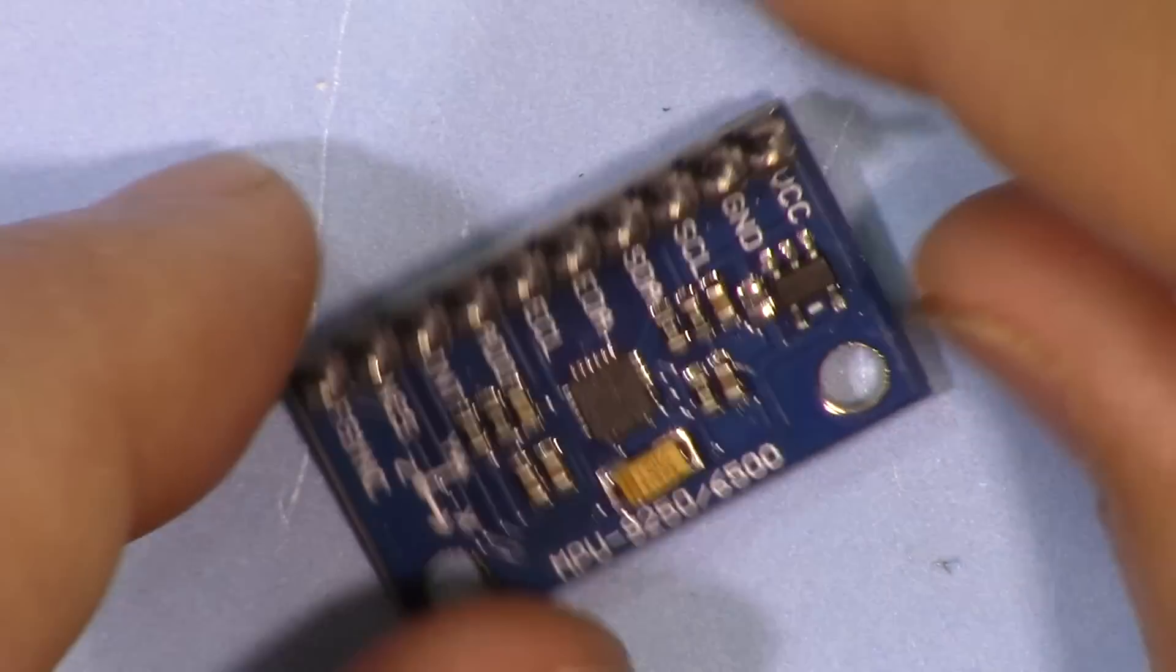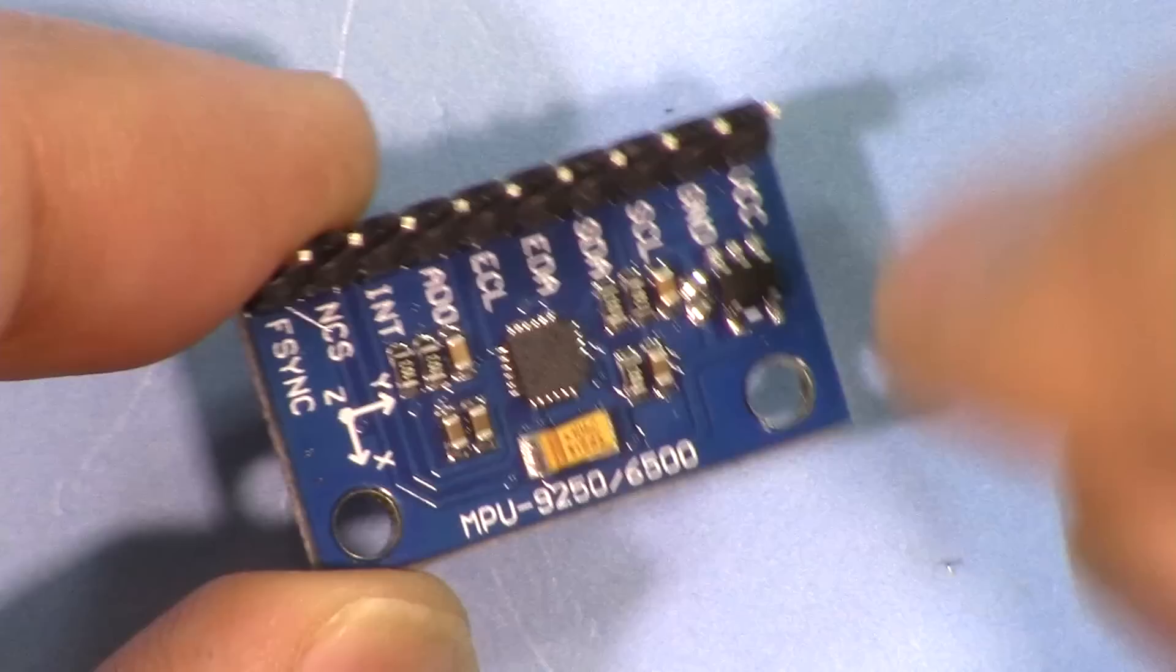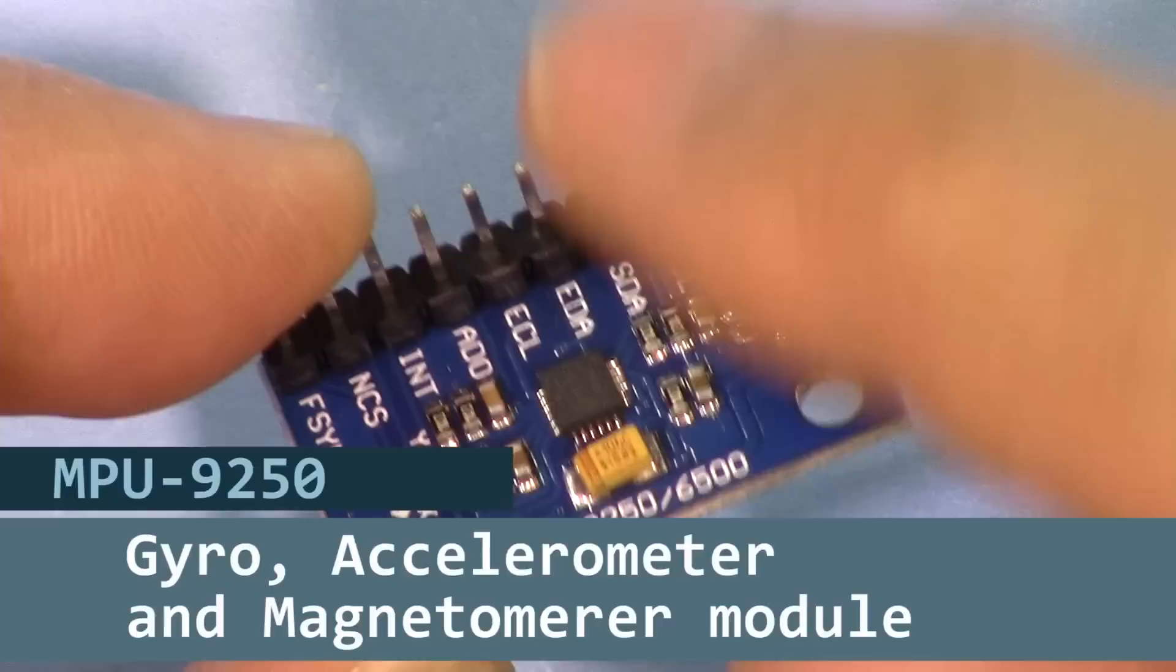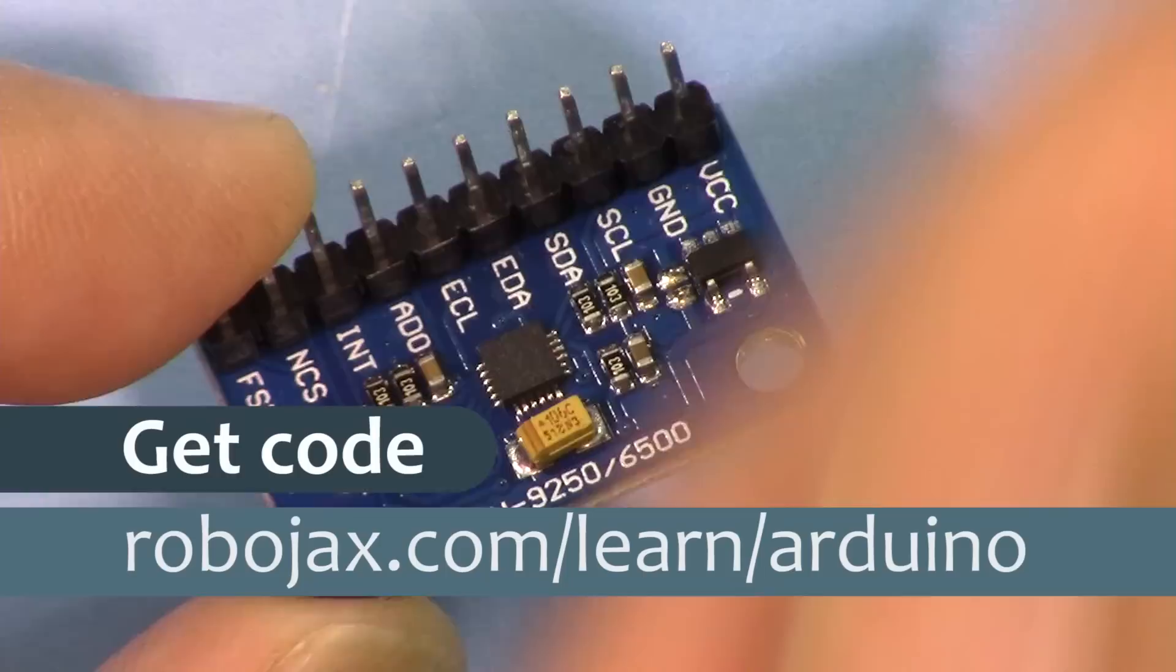Hi, welcome to an Arduino tutorial from Robojax. In this video we are going to see how we can use this MPU9250 accelerometer, gyroscope, and magnetometer all-in-one. You can get the code for this project by clicking the link in the description below which will take you to robojax.com/learn/Arduino. Let's get started.